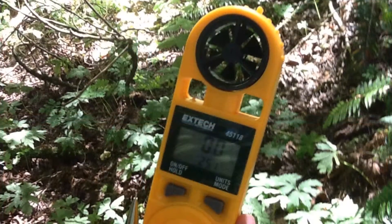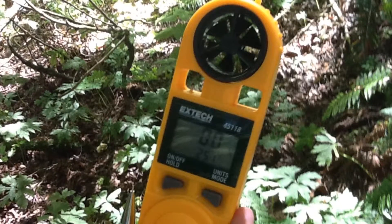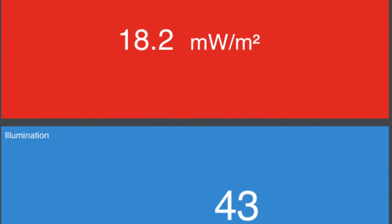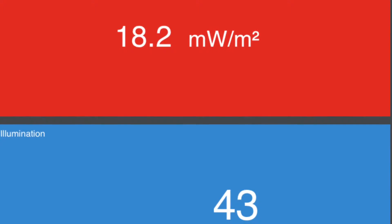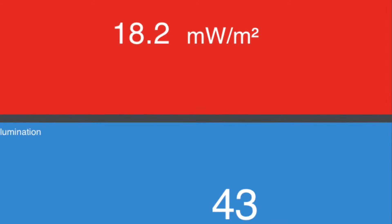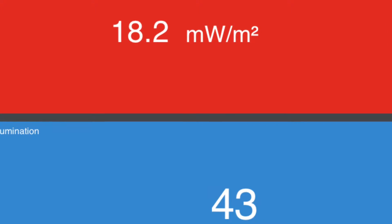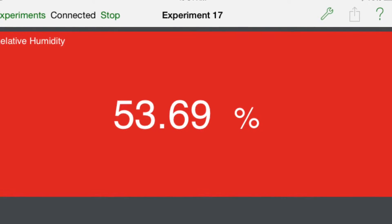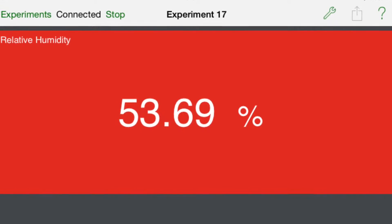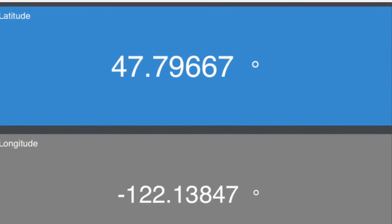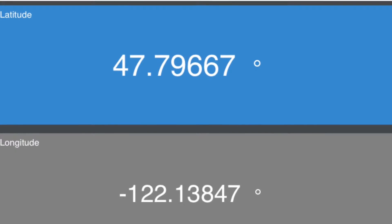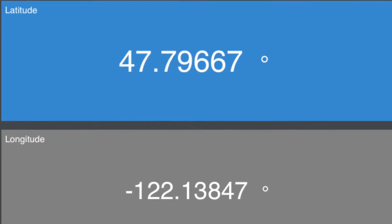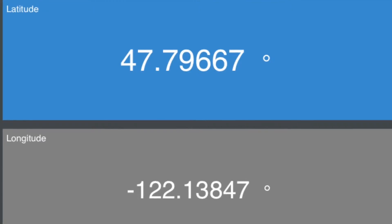Wind speed was actually 0 meters per second. The UV intensity is 18.2 and the light intensity is 43. The relative humidity was 54.7 percent. Coordinates for the forest site were 47.8 latitude and negative 122.13 longitude.